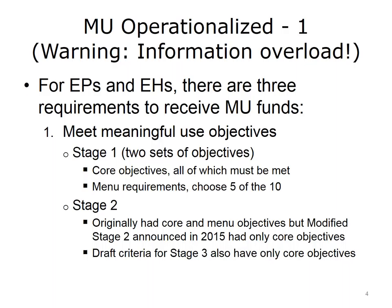In the Meaningful Use program, recall that there are eligible professionals, eligible hospitals, and critical access hospitals, and that they need to meet three requirements to receive reimbursement funds. One requirement is meeting the Meaningful Use objectives in the various stages. In the original Stages 1 and 2, each had two sets of objectives: the core objectives, which all had to be met, and a menu set from which users could choose a required number. Recently, Stage 2 has been modified to have only core objectives, and the criteria for Stage 3 have been released. In this new setup, those seeking remuneration via the Meaningful Use program must meet all of the objectives — there are no choices.